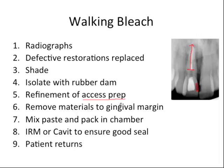Next, remove root filling material just apical to the CEJ — remove maybe one to two millimeters of material — and then place in that space a one-to-two millimeter apical seal with glass ionomer or some other barrier material to minimize leakage of bleaching agents to the periapical region through accessory canals to the PDL. We're just trying to keep the bleaching agent in the crown area; we don't want it leaking to the periodontium. Then mix the sodium perborate with an inert liquid like water or saline to the consistency of wet sand.